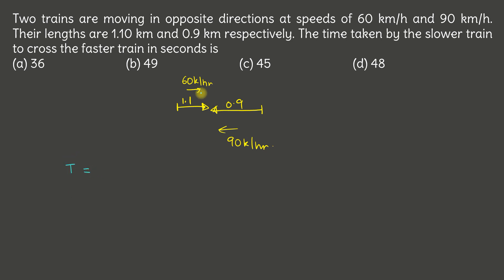Time taken to cross will be simply the sum of the length of the two trains which is 2 km divided by their relative speed.